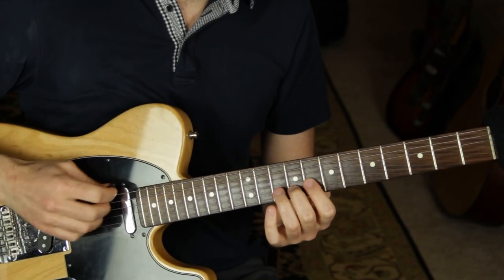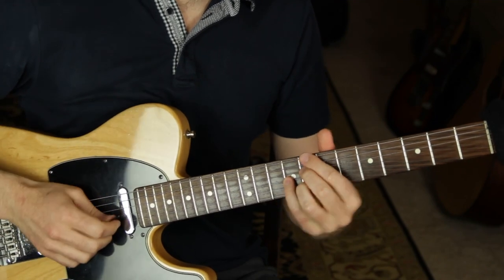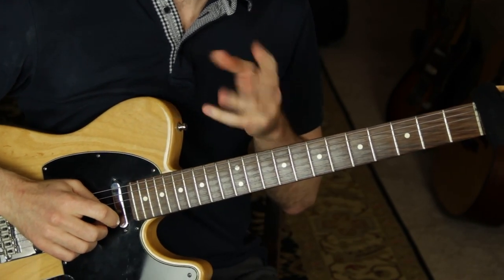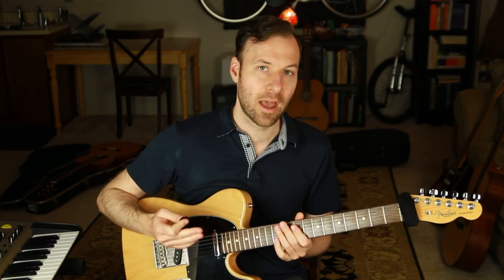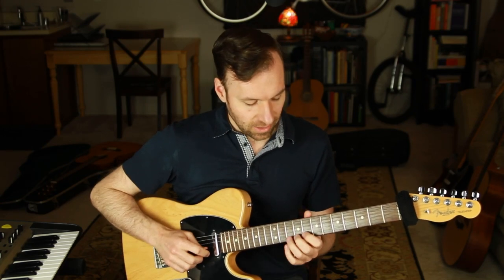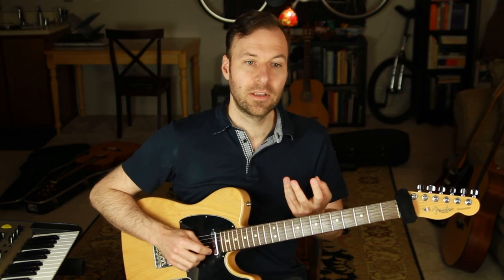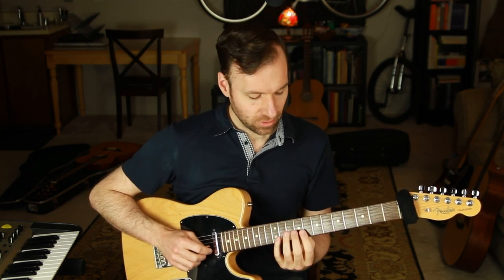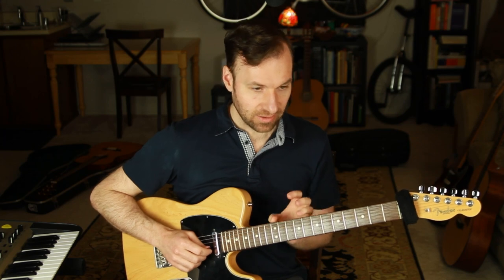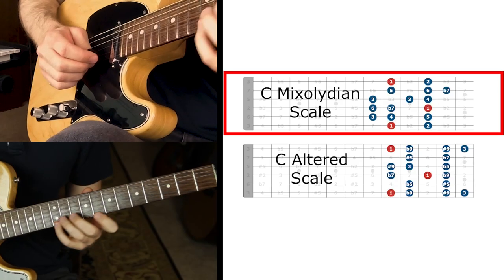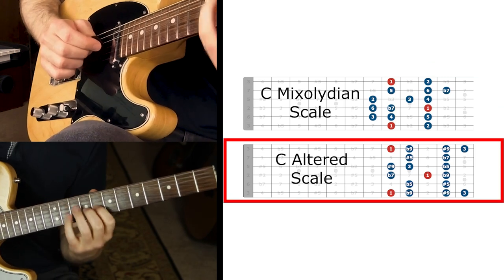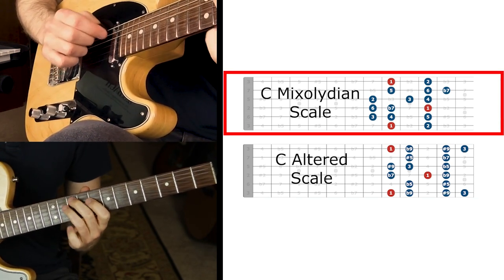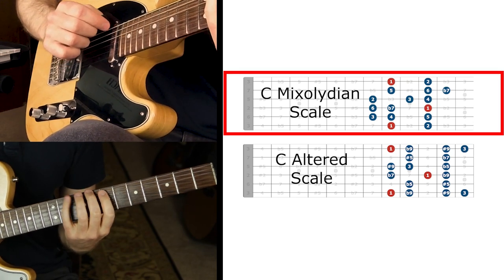You want to jam on C7, or any dominant seventh chord, for one measure, then switch to the altered scale for one measure. So you're treating it as C dominant seven — going from a C Mixolydian scale to C altered for one measure at a time. Notice how hard it is. If we can't do that, we're not going to be able to use it in music. It's especially tricky to make it feel expressive, but at first, don't worry about whether it sounds good.